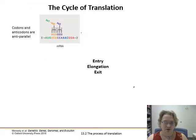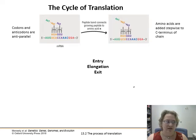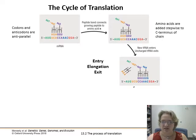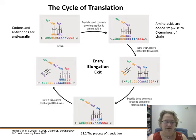So how does translation go? Fascinating little things called tRNAs — transfer RNAs — are going to bring amino acids to the mRNA. Those tRNAs are going to match up according to the codons there. The codon on the mRNA is going to match up to an anticodon on the tRNA, and the peptide bond will connect to the next amino acid. Amino acids are added stepwise to that C-terminus of the chain. A new transfer RNA enters as the uncharged one that has lost its amino acid exits. Another peptide bond is connected to the chain, and so on — entry of the new tRNA, elongation of the chain, and then exit as the uncharged tRNA leaves.